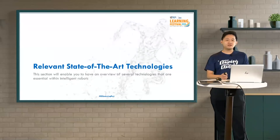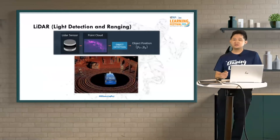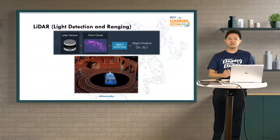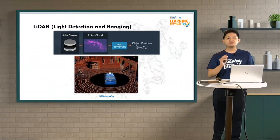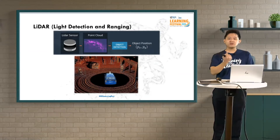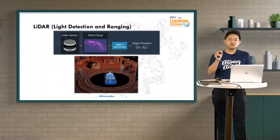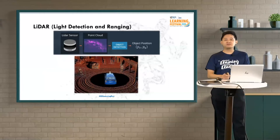In the next section, let me share some state-of-the-art technologies essential within intelligent robots. The first one is LIDAR — Light Detection and Ranging. The basic mechanism: LIDAR is a sensor that keeps spinning around, and while it spins, it shoots out laser beams for the purpose of detecting obstacles and measuring the distance between the obstacle and the sensor itself.